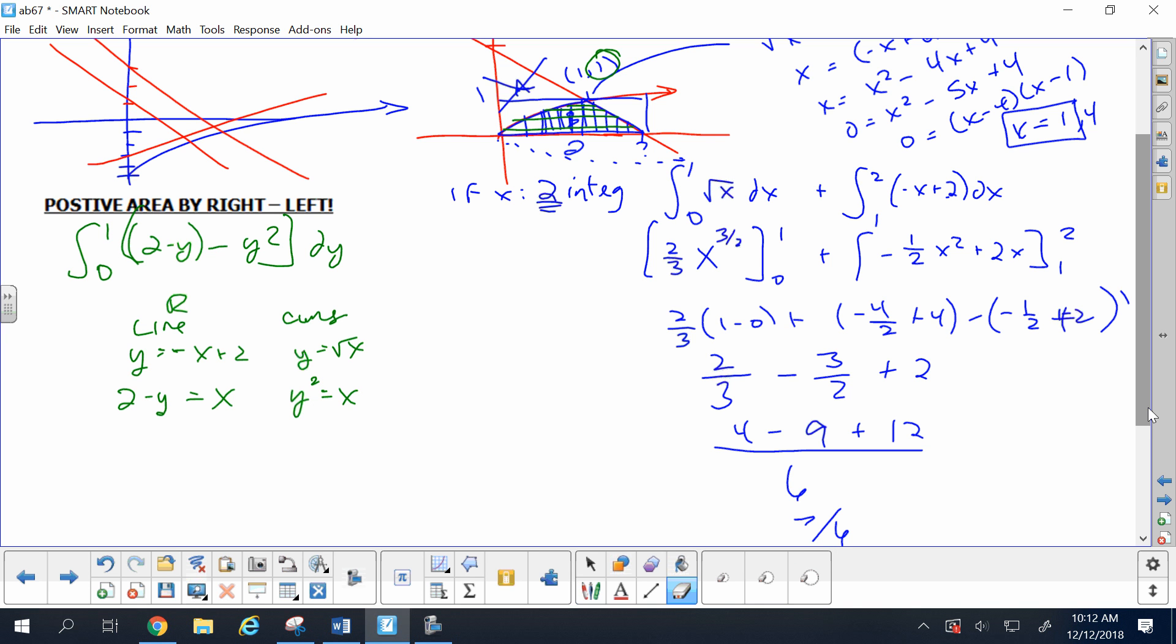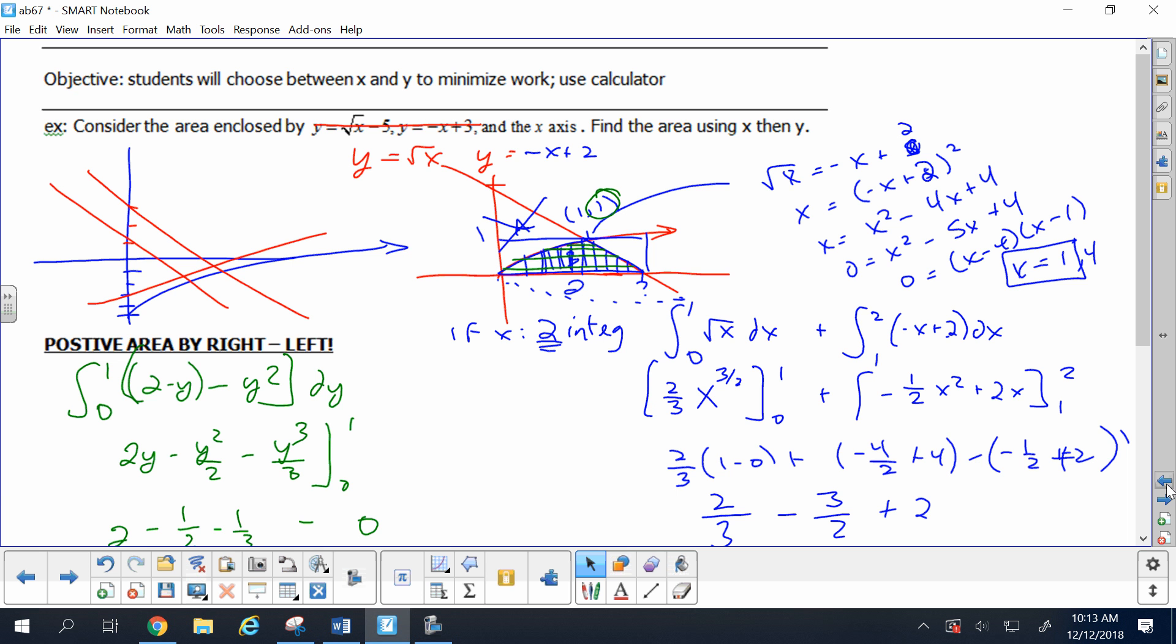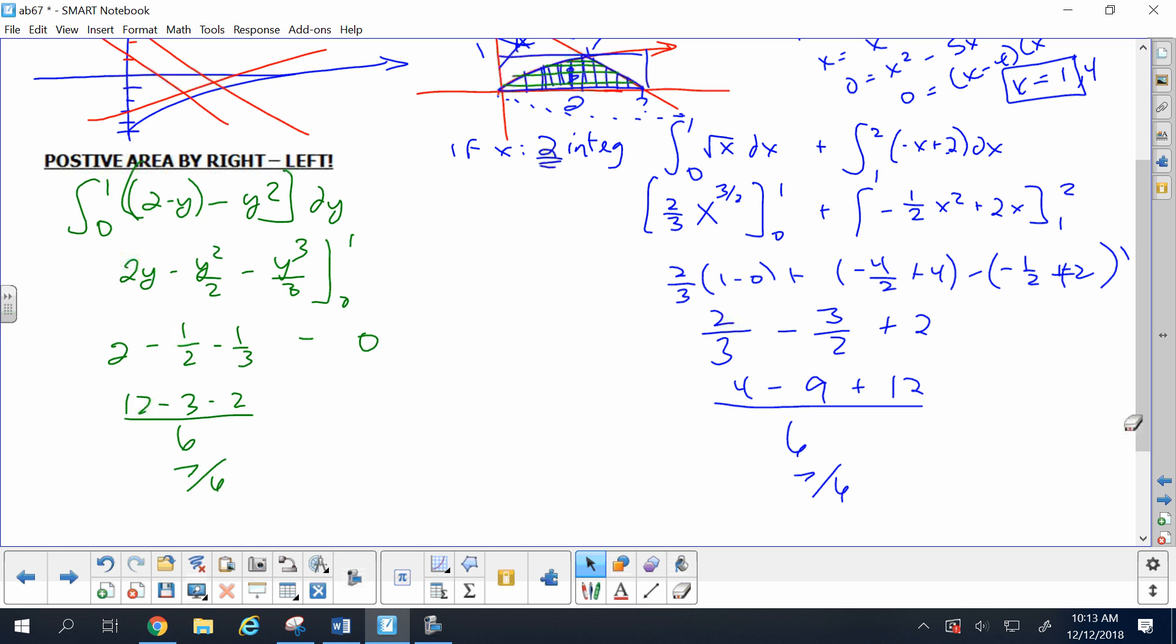If we integrate that, what's the anti-derivative of 2? 2y. The anti-derivative of y? Y squared over 2. And the anti-derivative of y squared? Y cubed over 3. So we get 2 minus 1 half minus 1 third minus a bunch of zeros. Common denominator of 6, that's 12 minus 3 minus 2, 12 minus 5 is 7 over 6. You can see that you'll get the same answer, but one way is definitely going to do less math.